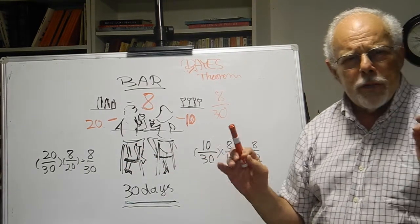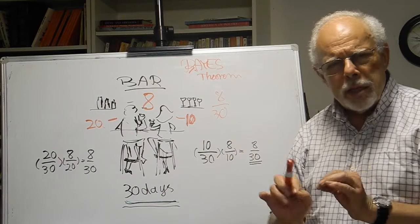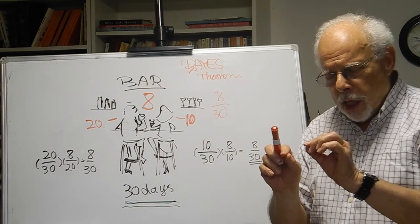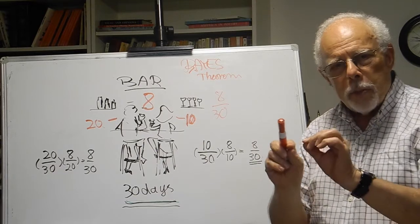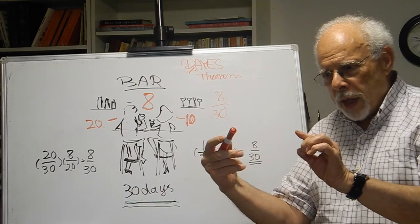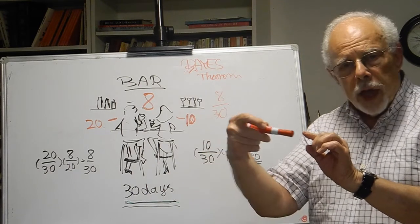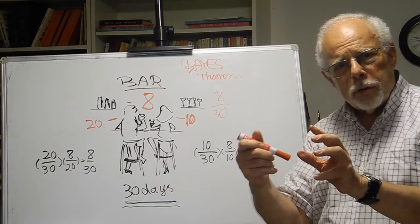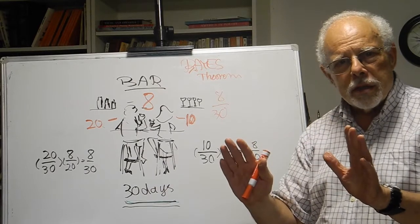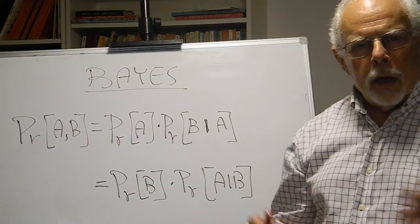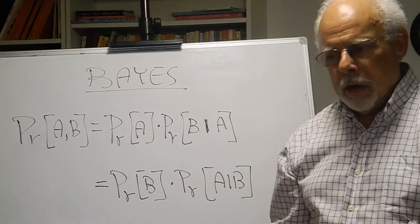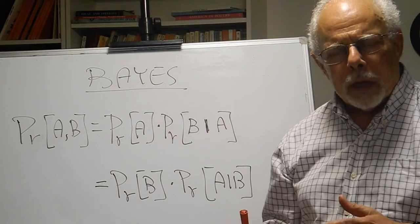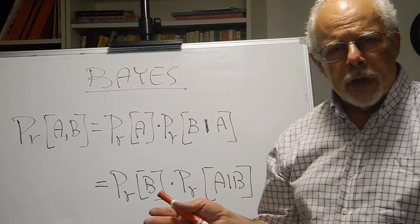So, Bayes has found something really simple. You can compute a joint probability from one event first and then go to the other, or from the other event first and then go to the first. That's it. When you tell the same story in the language of math, it looks more cryptic, but it's the very same story.